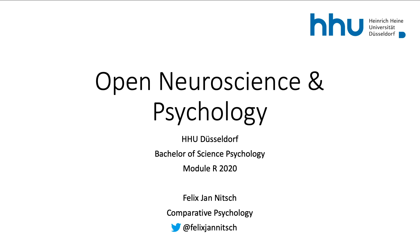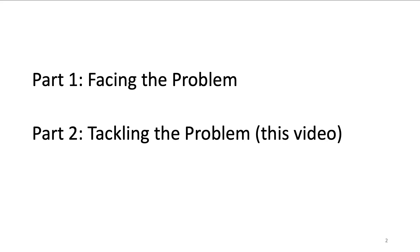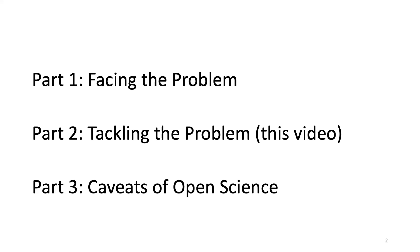Hello folks, Felix here from University Düsseldorf, Germany. In this video series it's all about open science in the field of neuroscience and psychology. The series consists of three parts. In the first part we have been talking about all the problems in conventional science and our motivation to engage with open science. In this video we are going to talk about practical measures which we can take as individuals and as a community to make science open, for example pre-registrations, using open software and non-profit journals. In the last part we are going to address some caveats of open science and how to deal with them.